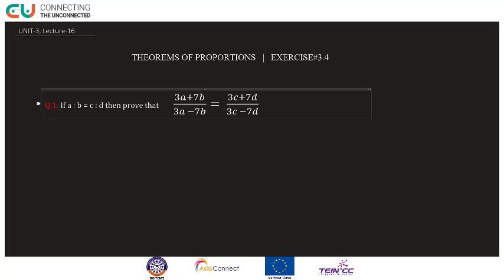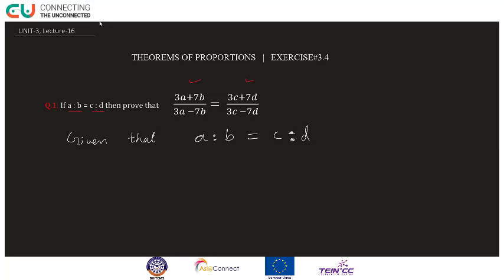Bismillahirrahmanirrahim. Exercise 3.4, question number 1 dekhte hain. Question kehta hai: if a ratio b equals c ratio d, then prove that 3a plus 7b divided by 3a minus 7b equals 3c plus 7d divided by 3c minus 7d. Is question ko step by step solve karte hain.